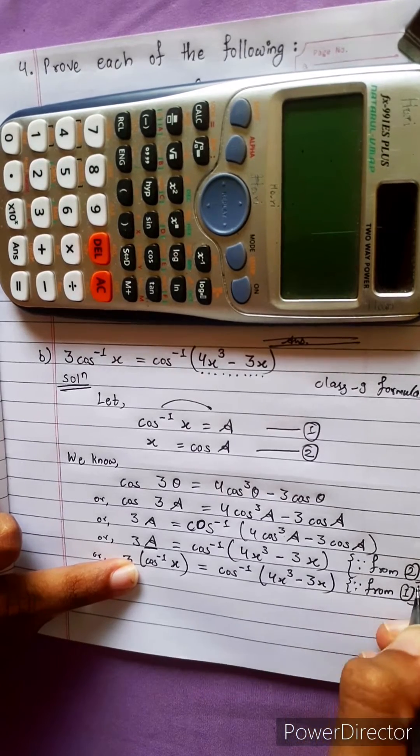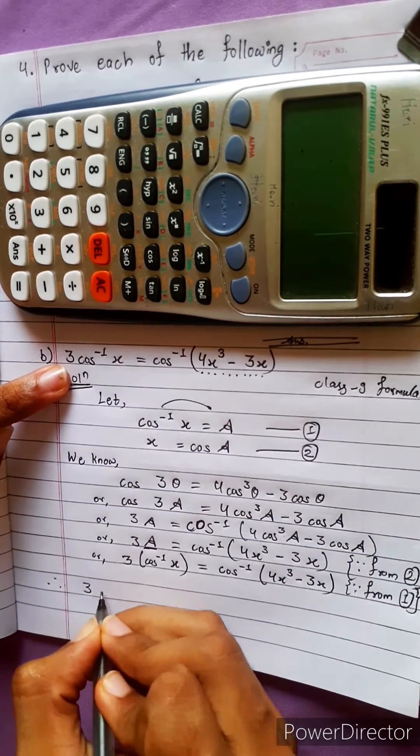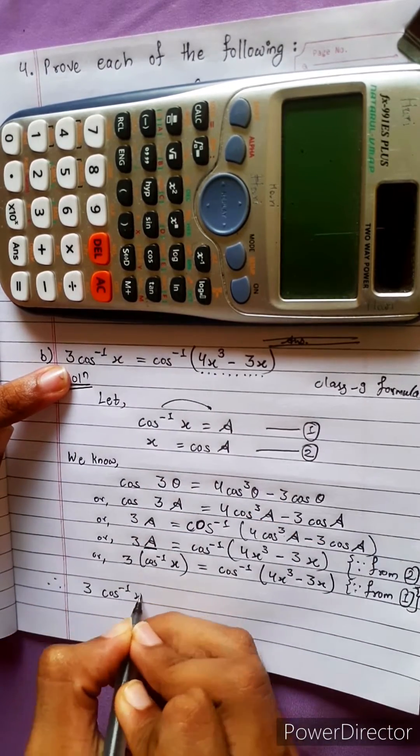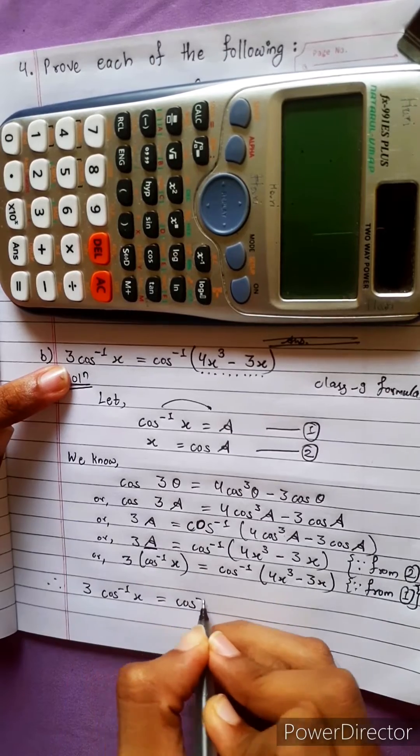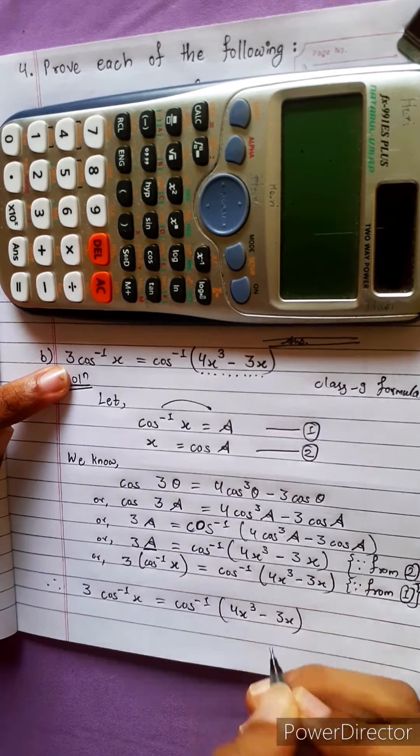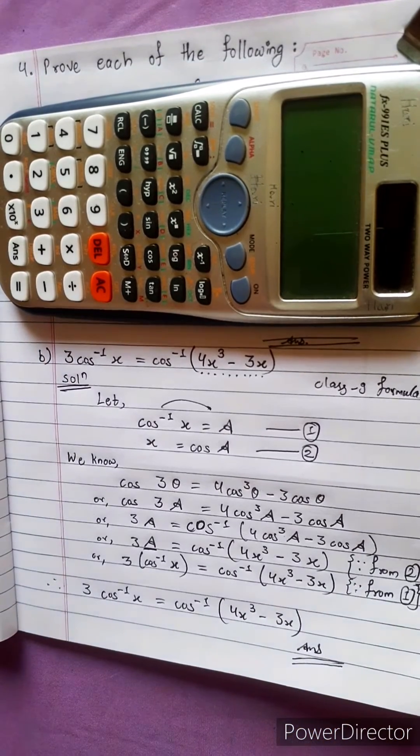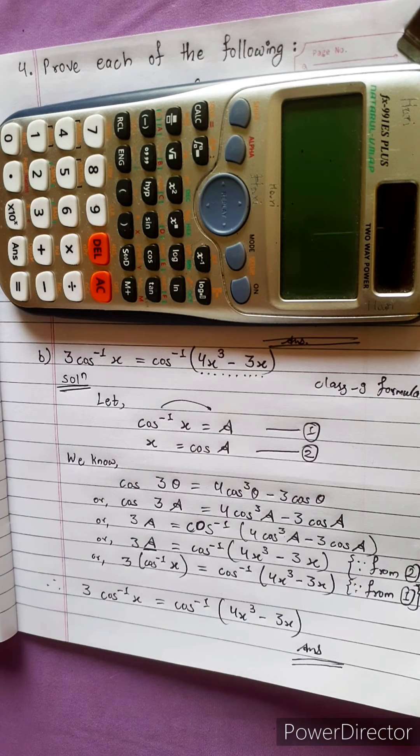Now what we have to prove? Same thing. Therefore we have already proved this: 3 cos inverse x equals to cos inverse 4x cube minus 3x. Bye bye and be ready for next question.